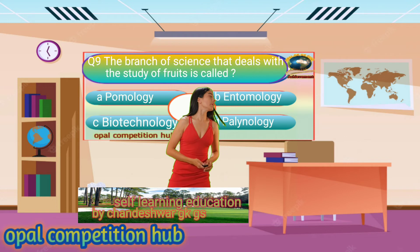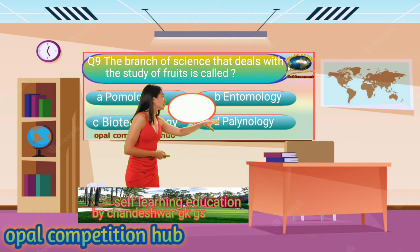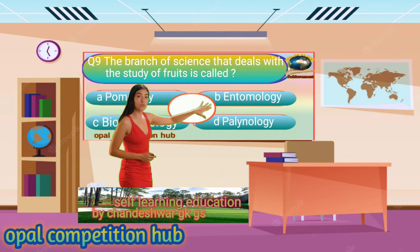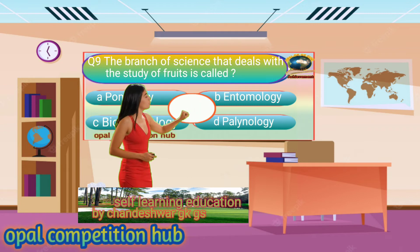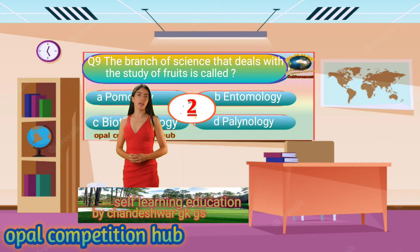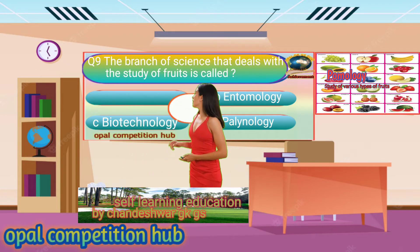Question number 9. The branch of science that deals with the study of fruits is called. Your options are: Option A. Pomology, Option B. Entomology, Option C. Biotechnology, Option D. Pallenology. Your time starts now. Your answer will be Option A. Pomology.